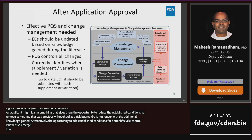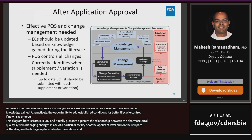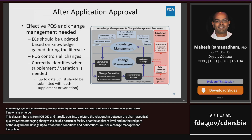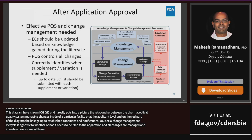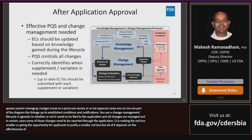The diagram from ICH Q12 puts into picture the relationship between the pharmaceutical quality system managing changes at the applicant level and the linkage up to established conditions and notifications. The change management lifecycle is really agnostic to whether it needs to be filed to the application — all changes are managed under a consistent approach, and only in certain cases do some of those changes need to be reported to the application. What Q12 is doing is essentially making that 'red box' smaller, or giving applicants the opportunity to justify a smaller red box than what would normally be expected under regulation and guidance, depending on the effectiveness of the PQS.